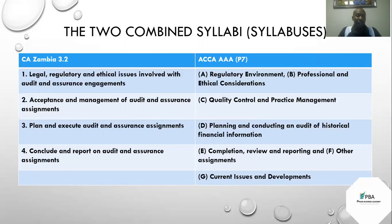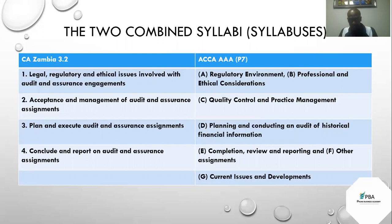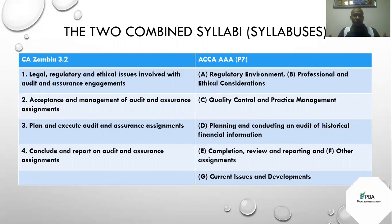The second area is acceptance and management of audit and assurance assignments. Under ACCA it is called quality control and practice management. At this level, we are away from the framework governing the accountancy profession and are now looking at the audit firm as a business. How is the audit firm supposed to conduct itself? We will be looking at issues to do with quality — very difficult to define, though there are some standards that have talked about it — quality at the firm and quality in the field.